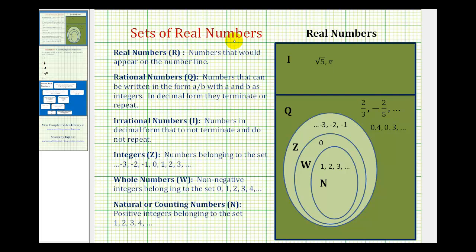Now we're going to review different sets of real numbers. Real numbers, identified by capital R, are numbers that would appear on the number line. And all real numbers are either rational numbers or irrational numbers.